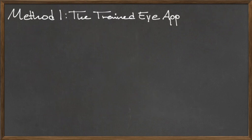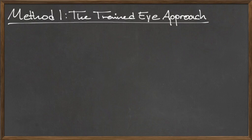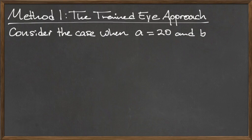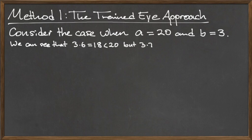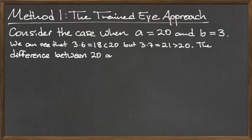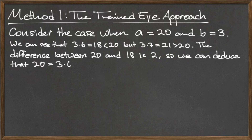The first method for computing a mod b is known as the trial-and-error approach, which we will illustrate by way of example. Let's compute a mod b when a equals 20 and b equals 3. The idea behind the trial-and-error approach is to find the multiple of b that gets us closest to a without going over.